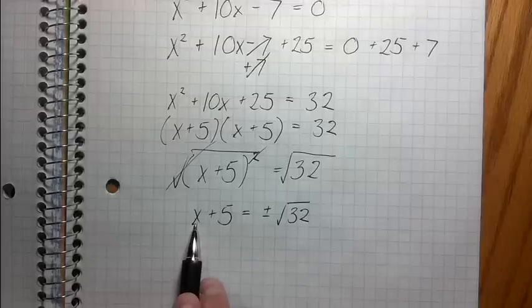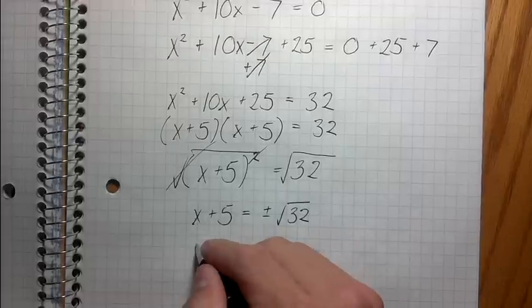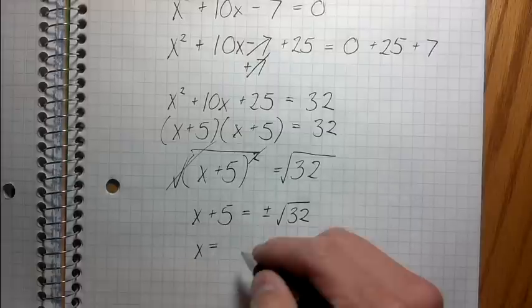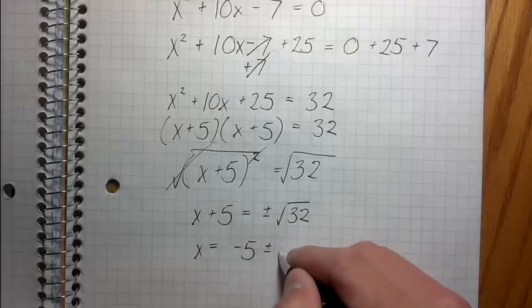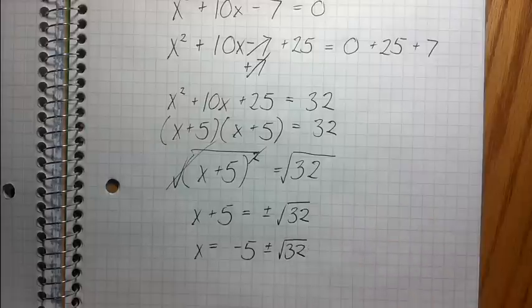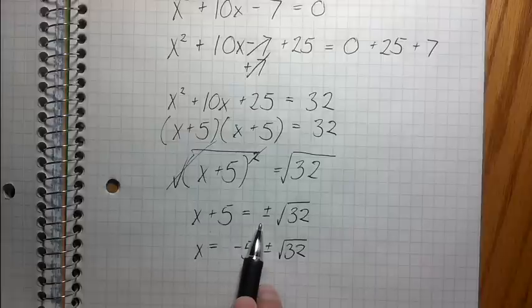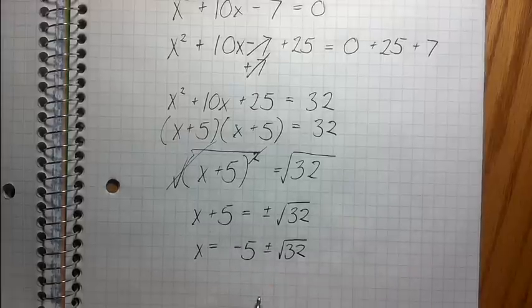So check it out. Now it's very simple to solve for x, right? So x is just negative 5 plus or minus root 32, right? Because see how I just subtracted the 5 from both sides, just took this 5, moved it over.